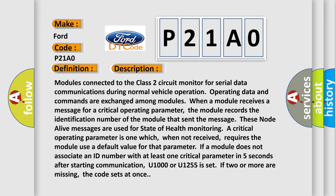Modules connected to the Class 2 circuit monitor for serial data communications during normal vehicle operation. Operating data and commands are exchanged among modules. When a module receives a message for a critical operating parameter, the module records the identification number of the module that sent the message. These node alive messages are used for state of health monitoring. A critical operating parameter is one which, when not received, requires the module use a default value for that parameter.